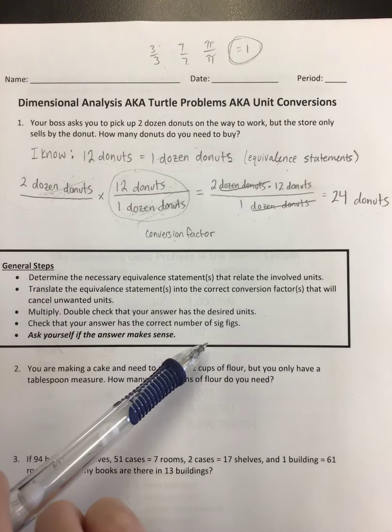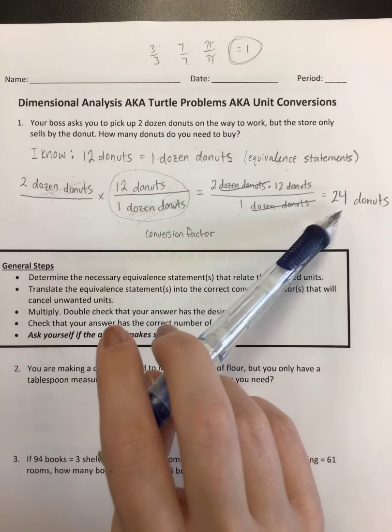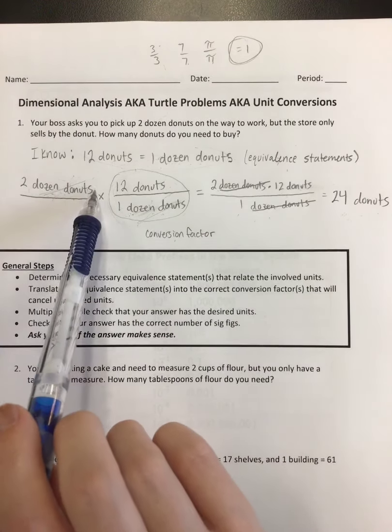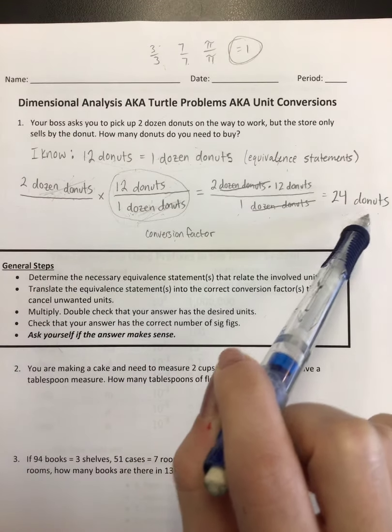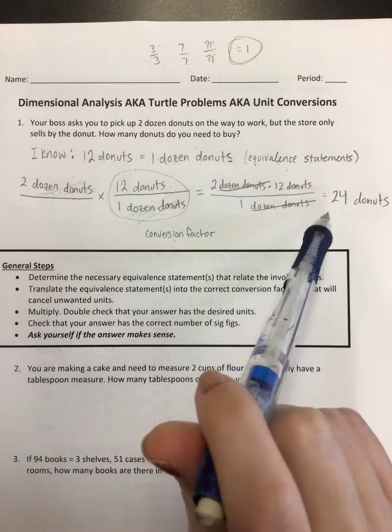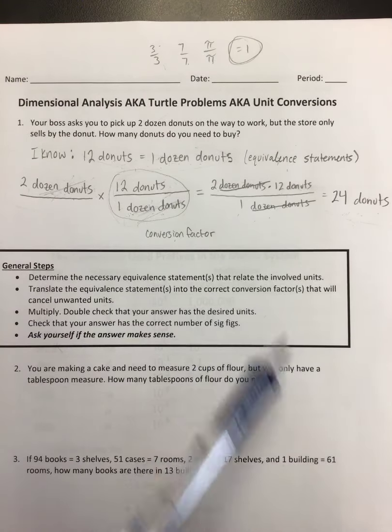And then ask yourself if the answer makes sense. I can look back on this and see, okay, I ended up with a bigger number. Does it make sense if I start with two dozens of donuts to end up with a larger number of just plain donuts? Yes, it does. It looks reasonable. And again, most of you probably could do this in your head. You know it's right.